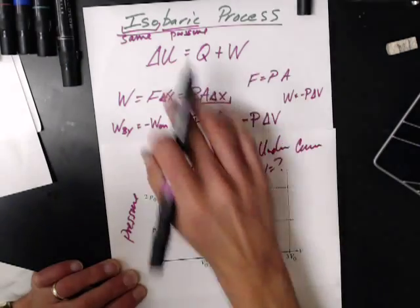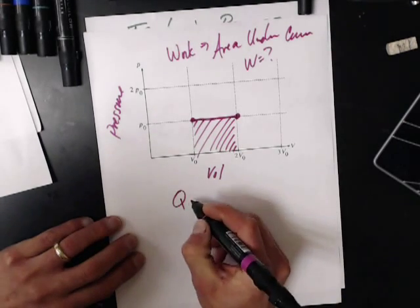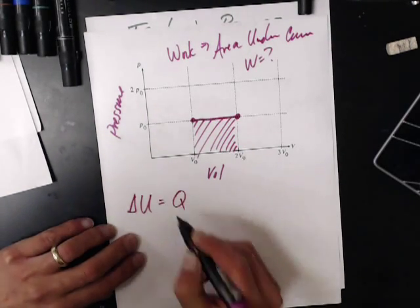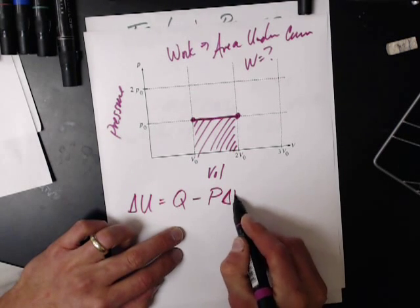So I can move this around, so now my first law looks like this. So the change in internal energy is the amount of heat that's moved minus P delta V.